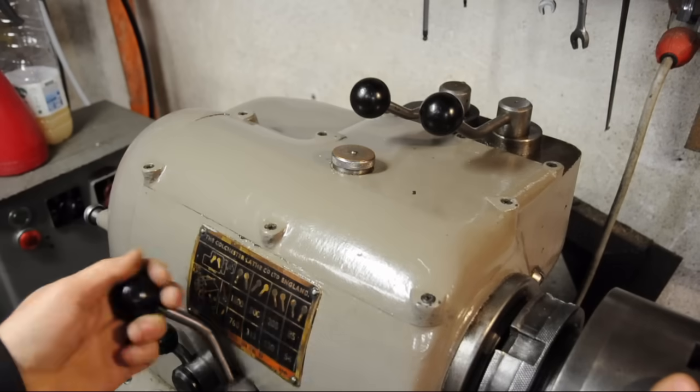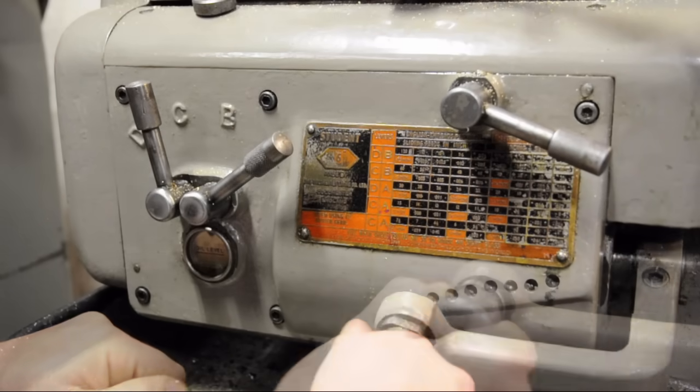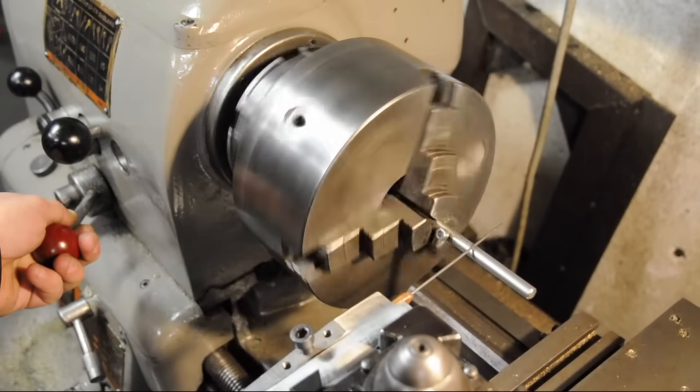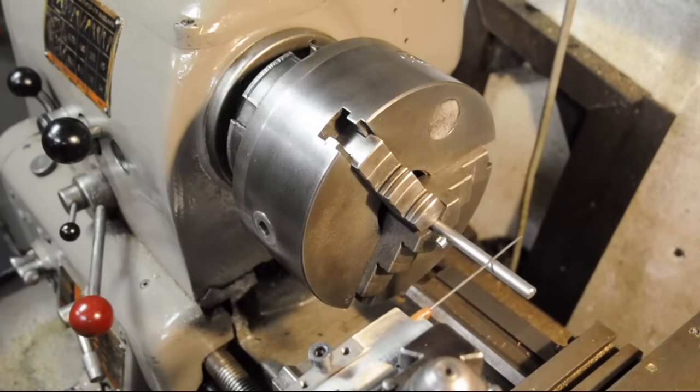Set your lathe to its lowest speed and to the pitch of spring you'd like to wind. Ensure your lathe will move the way you expect it to, making sure spindle and feed directions are correct. It's now time to make the donuts.